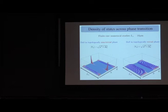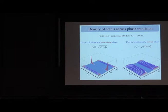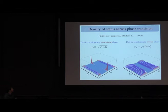For this structure, plotting the density of states as a function of energy and position along the wire, one can see the Majorana zero-energy peaks exponentially localized at the ends of the wire, with some oscillations associated with Friedel-type physics. In this simple model there are no other states up to the gap, so there is a chance to resolve these zero-energy states in experiments. In the non-topological phase these peaks disappear.